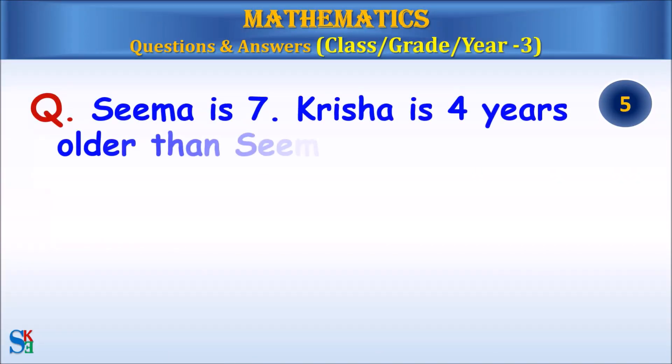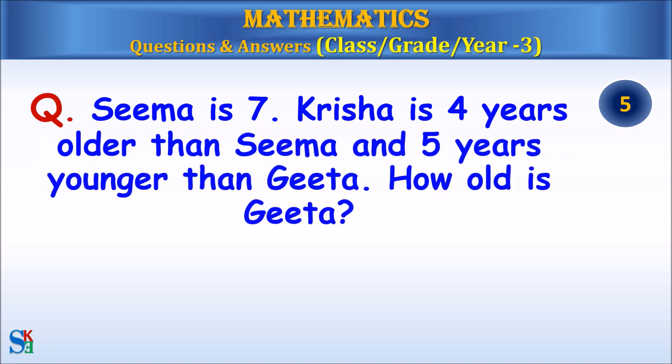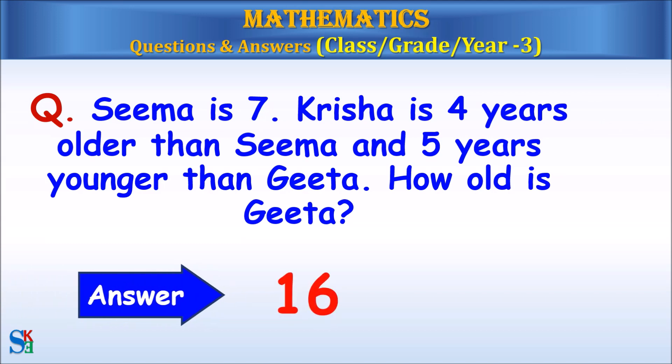Seema is 7. Krisha is 4 years older than Seema and 5 years younger than Gita. How old is Gita? Answer: 16.